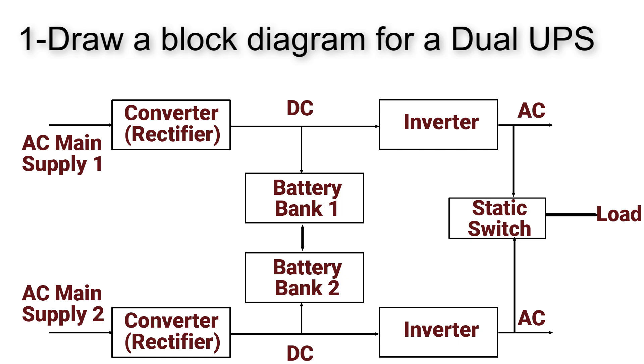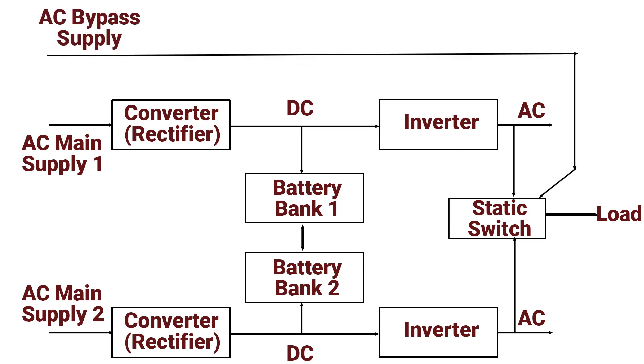In normal condition the power comes from the main AC supplies through the converter then inverted to the critical loads. In case of a sudden shutdown the charged batteries will start to supply the critical loads for a time until the main power returns.